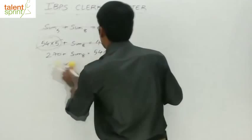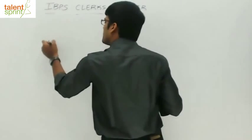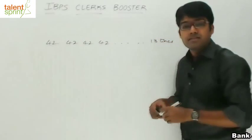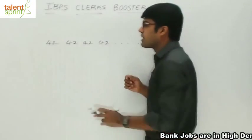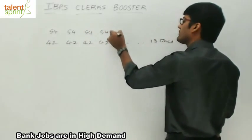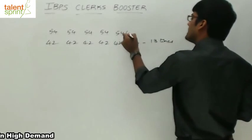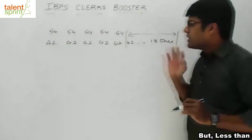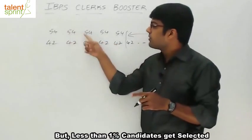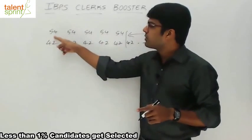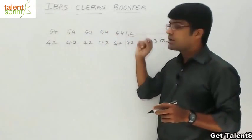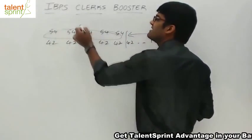But what happened? Every match it should be 42 — 42, 42, 42, 13 times. But in the first 5 matches the average is 54. So first match it was 54, 54, 54, 54, 54. So in the first 5 matches it should actually be 42, but it is 54 — that is 12 more per match. So 12 more in the first match, 12 in the second, 12 in the third, 12 in the fourth, 12 in the fifth. Total extra: 12 into 5 equals 60 extra.